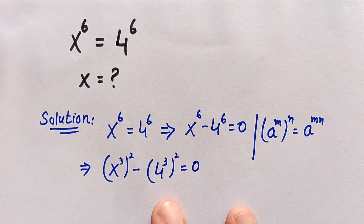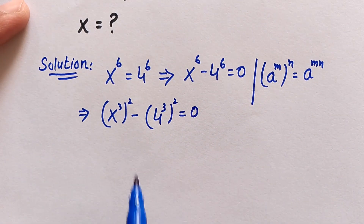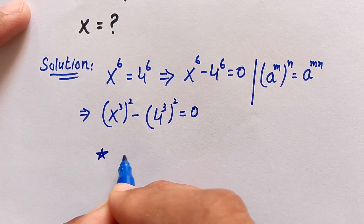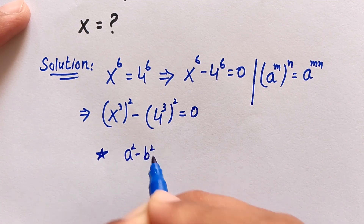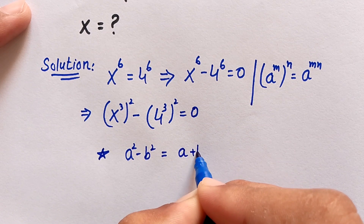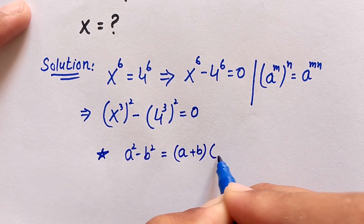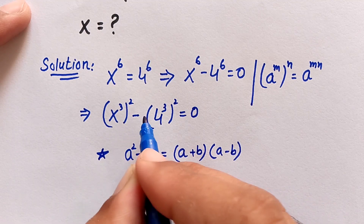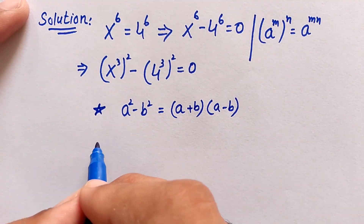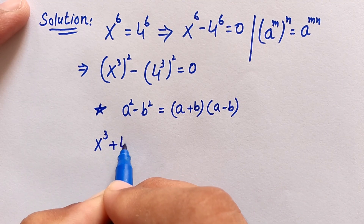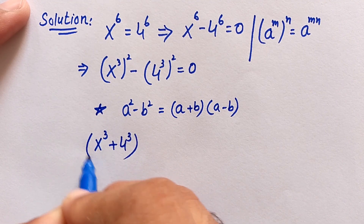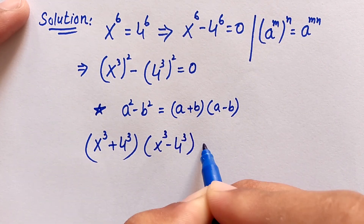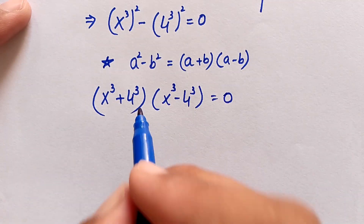Now we apply the difference of squares identity: a squared minus b squared equals (a plus b)(a minus b). This gives us (x to the power of 3 plus 4 to the power of 3) times (x to the power of 3 minus 4 to the power of 3) equals 0.